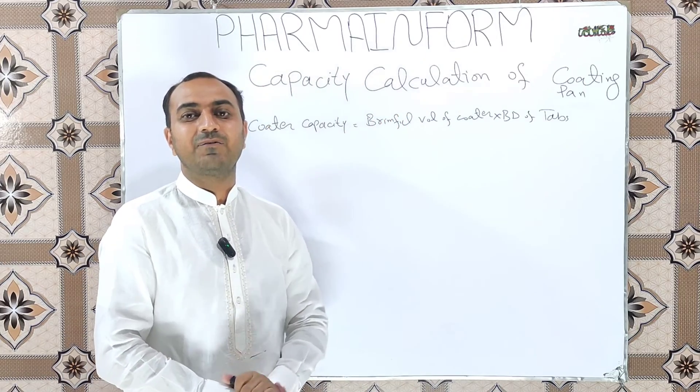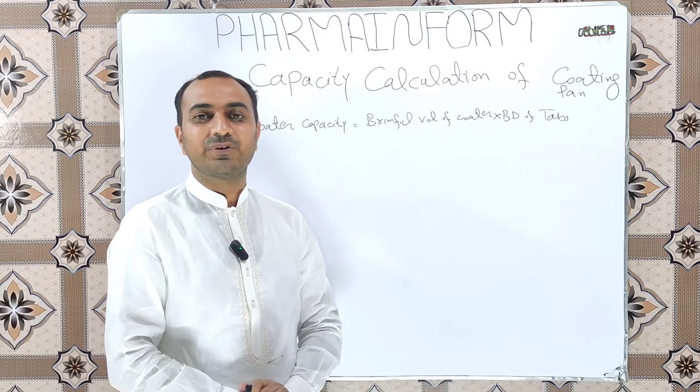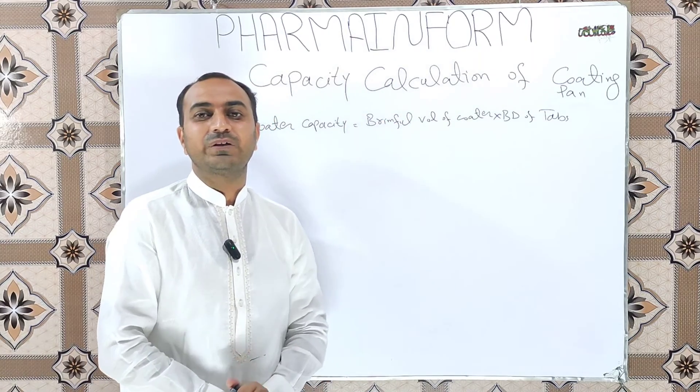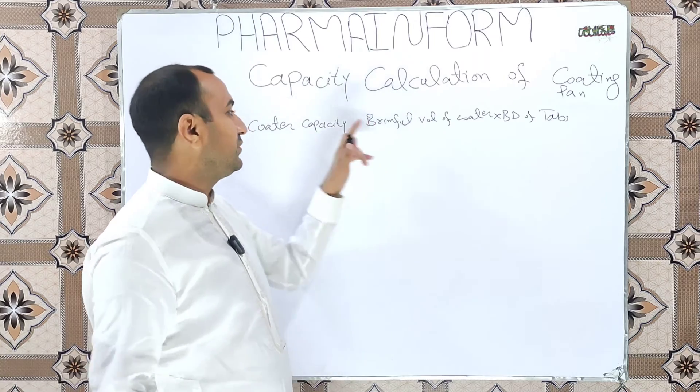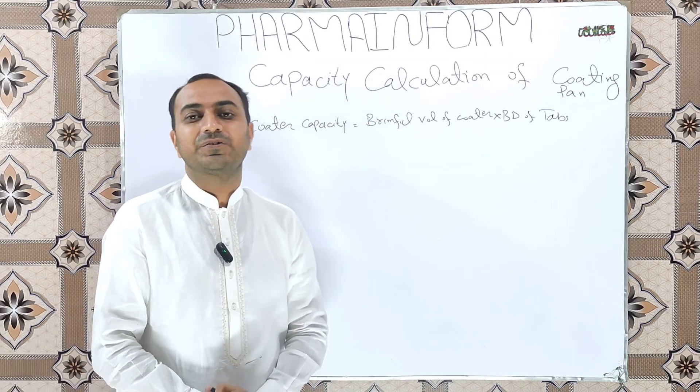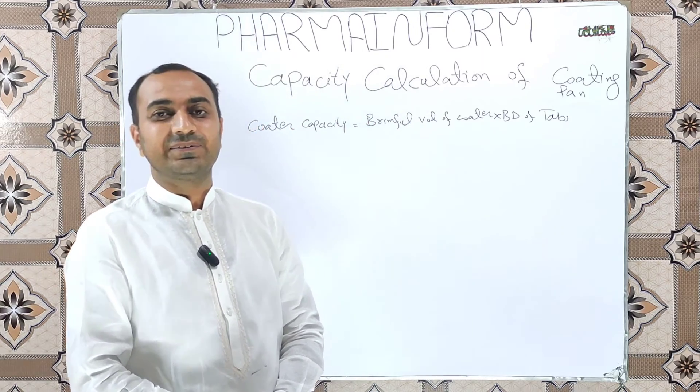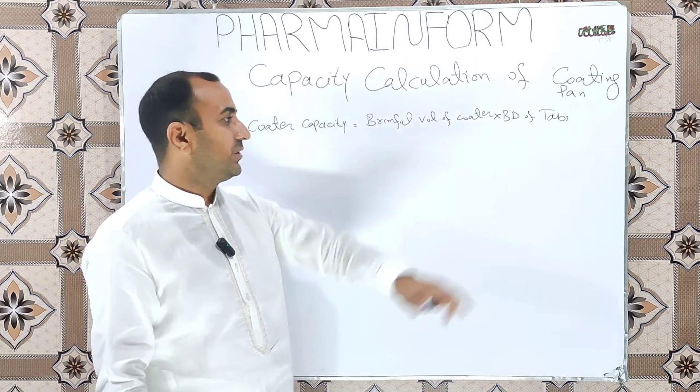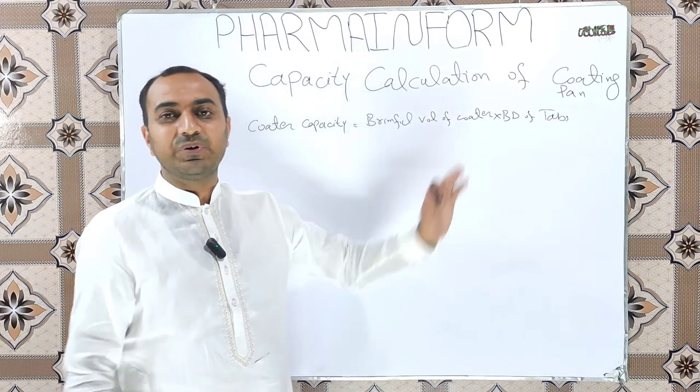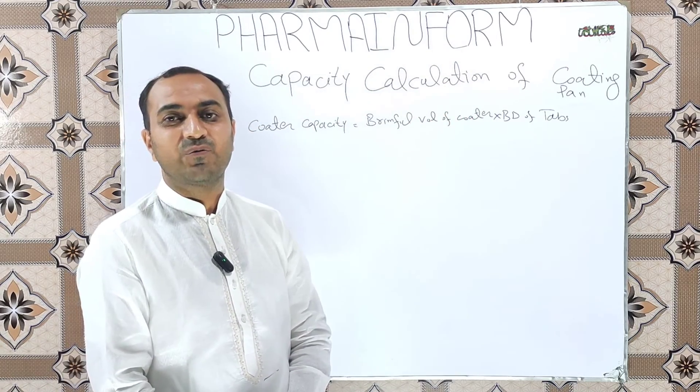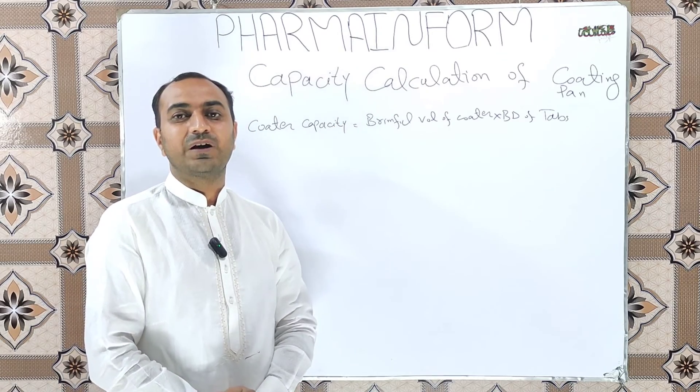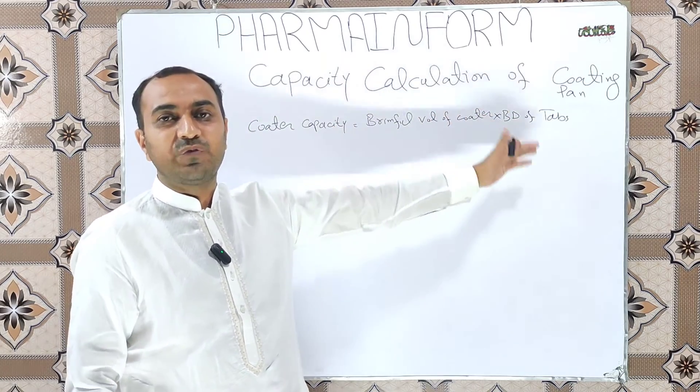So let's start our video. To calculate the capacity of the tablet coating pan or the occupancy volume of the tablet coating pan, we use the formula: capacity of the coating pan is equal to the brimful volume of the coater into the BD of the tablet. BD is the bulk density of the tablet. To calculate the capacity of the coater, we need two factors.